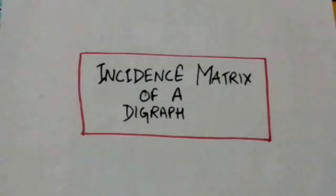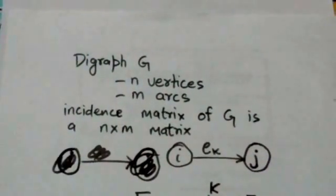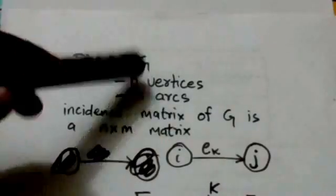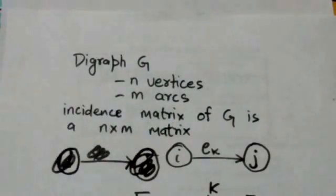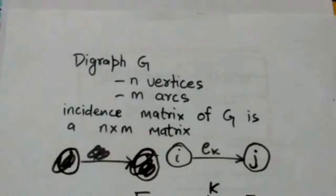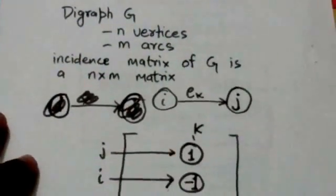Hello friends, welcome back. In this tutorial we will study about the incidence matrix of a digraph. The incidence matrix of a digraph with n vertices and m arcs is an n×m matrix in which each entry is 0, 1, or minus 1. Rows of the incidence matrix correspond to vertices and columns correspond to arcs.